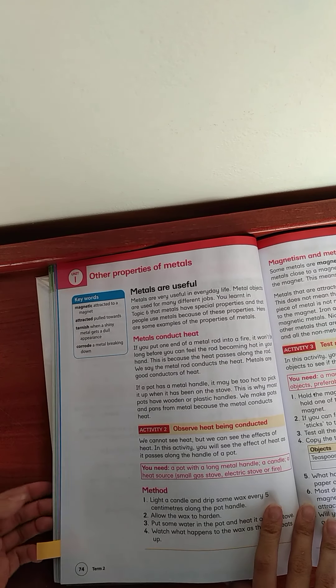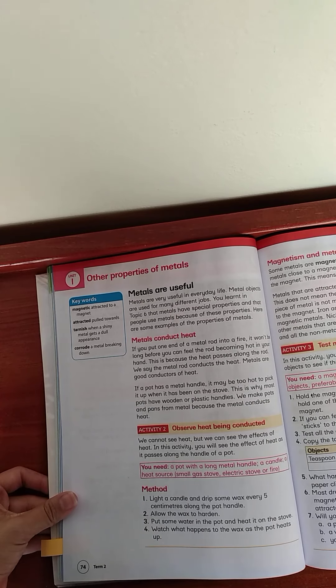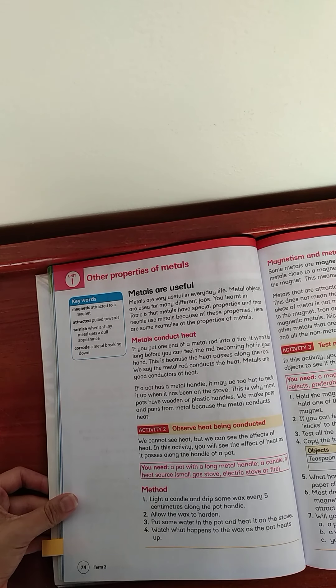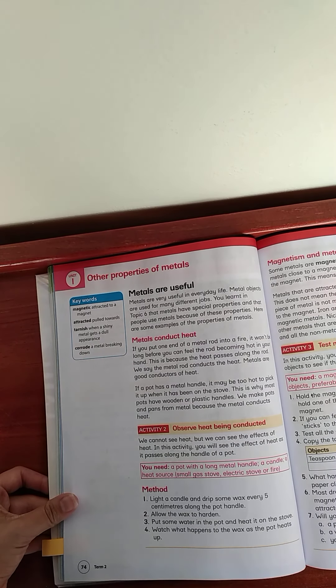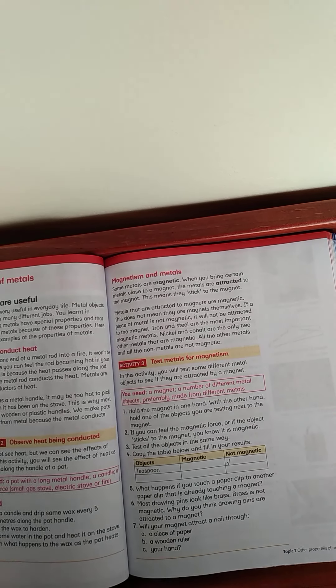But once again, I want you to, if you're not able to do this activity, just ask your mom to show you how she cooks something so that you can see the water boiling and sort of not touch the pot, but feel really close to it, how it becomes warm. Now, page 75. Magnetism and metals.